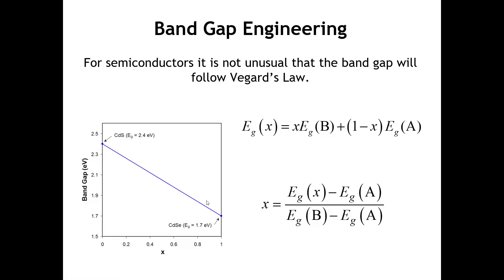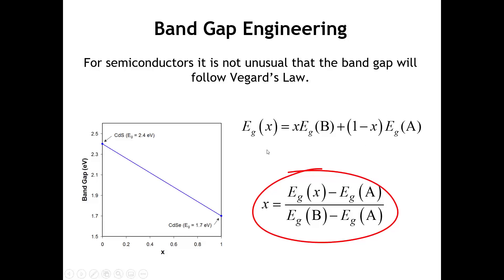The mathematics behind this are basically the same as they are for a lattice parameter. The formula above can be used to calculate the band gap of any intermediate composition between cadmium sulfide and cadmium selenide. We can rearrange this formula to solve for x, which gives us the equation below. The point of that equation is that if we knew the band gap of an intermediate composition, we could calculate the value of x — that is, we could calculate what that composition is.